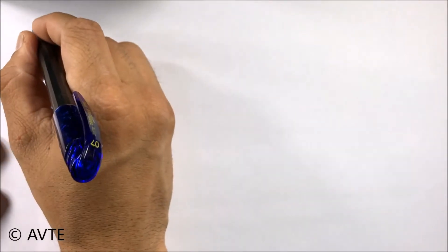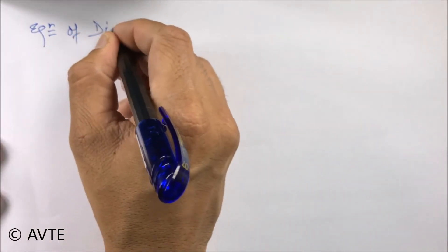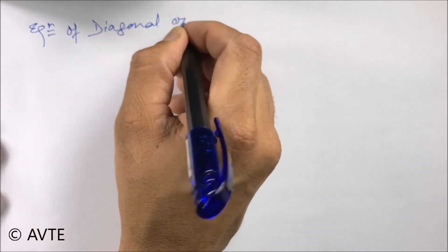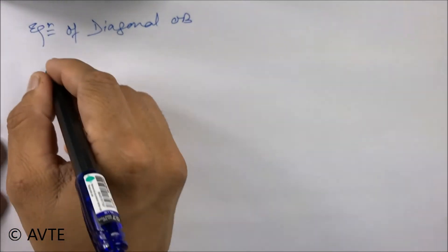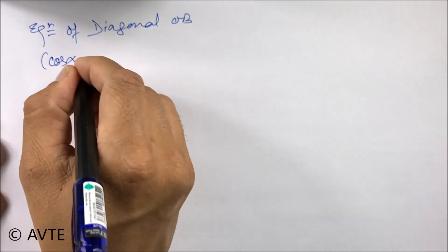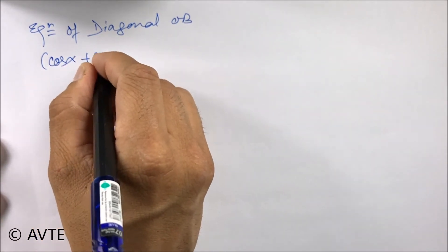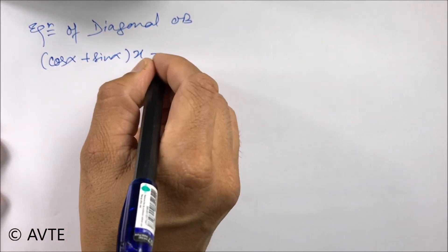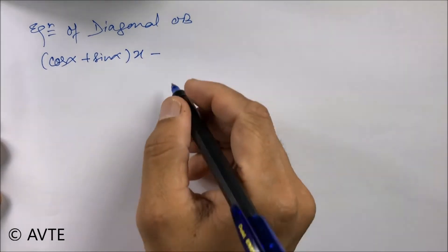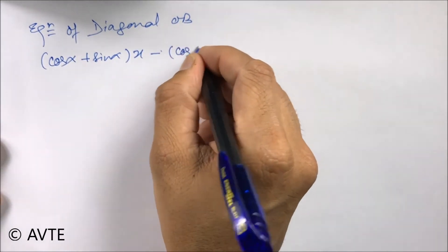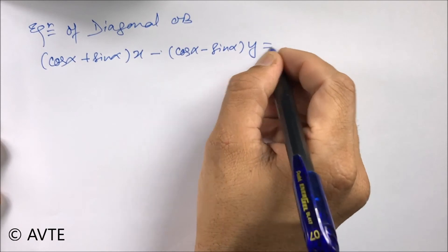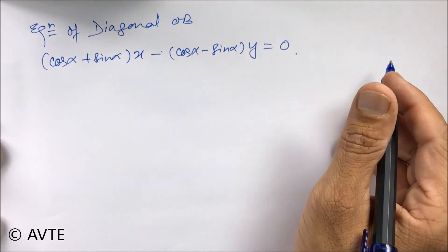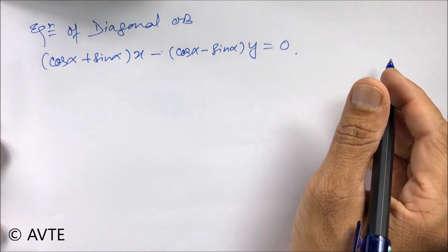So the equation of diagonal OB is cos alpha cos pi by 4 minus sin alpha sin pi by 4 times y minus sin alpha cos pi by 4 plus cos alpha sin pi by 4 times x equals zero, or any other arrangement which is valid in straight lines.